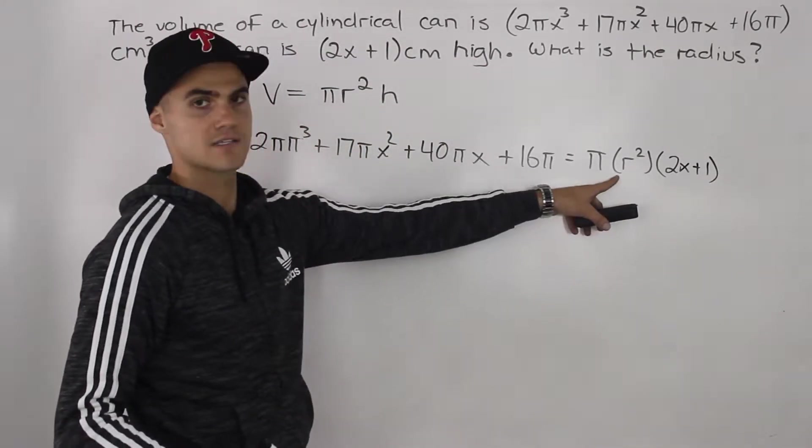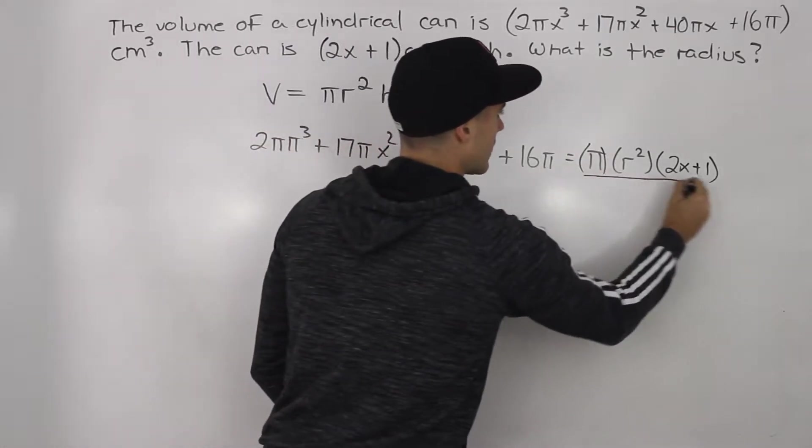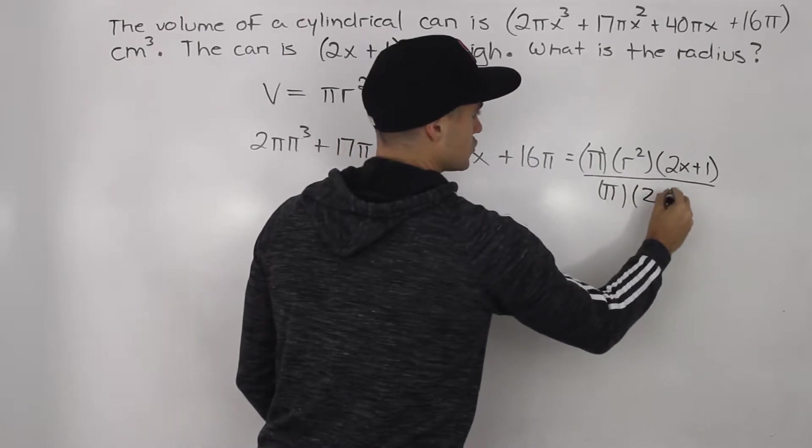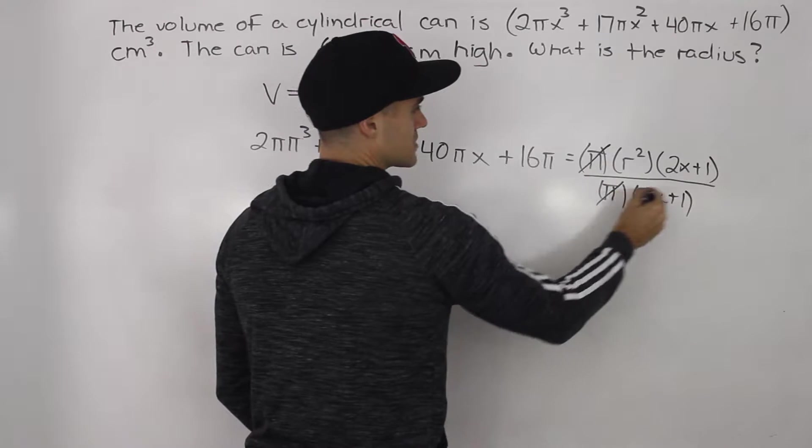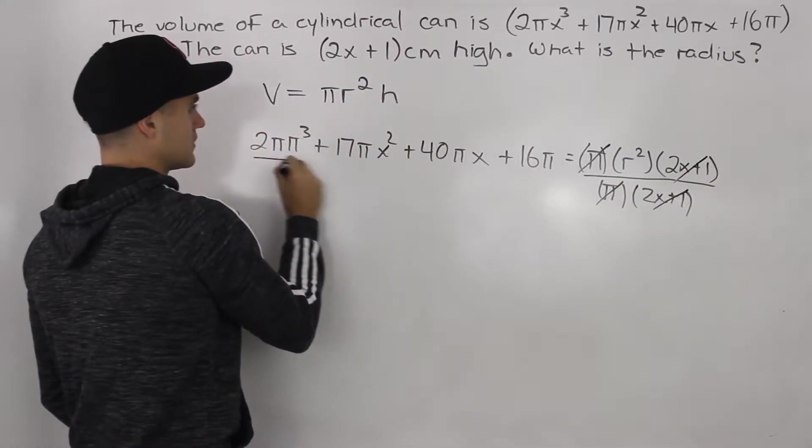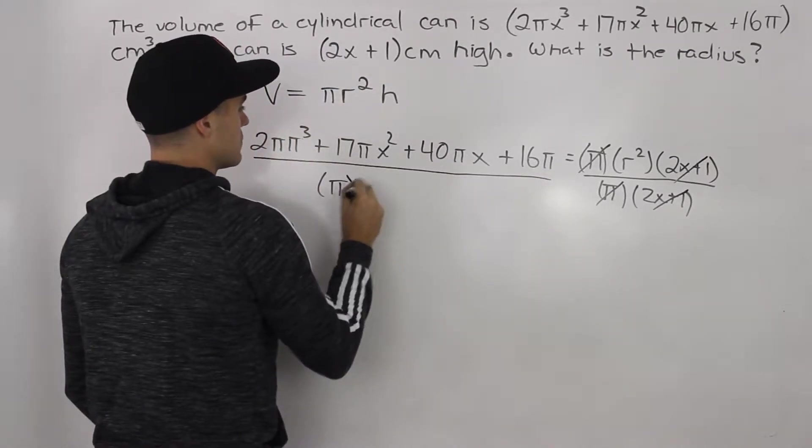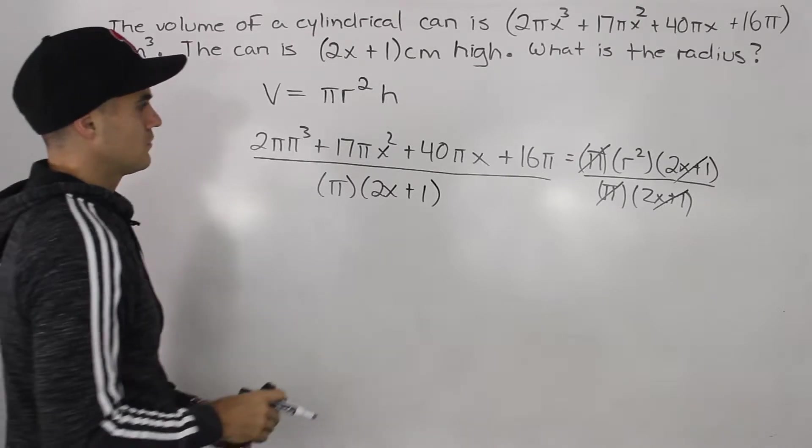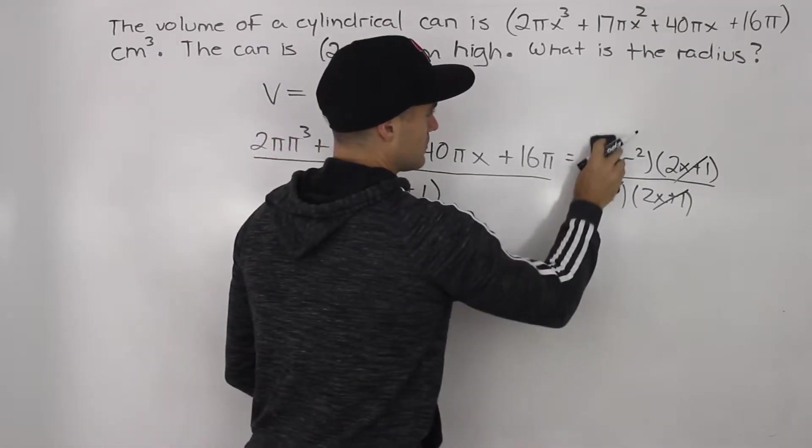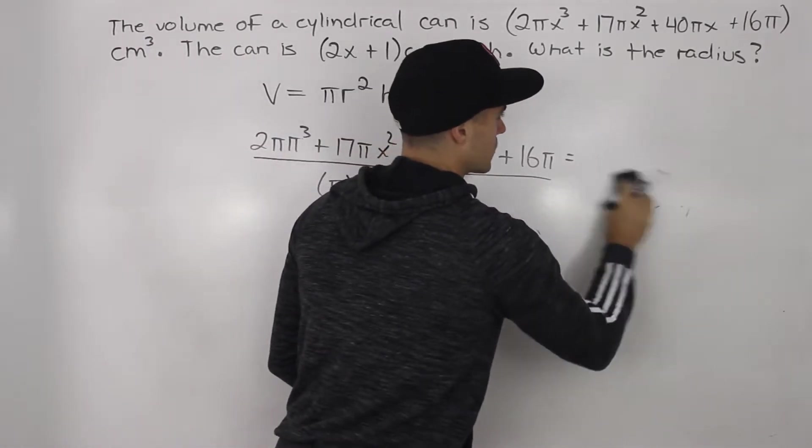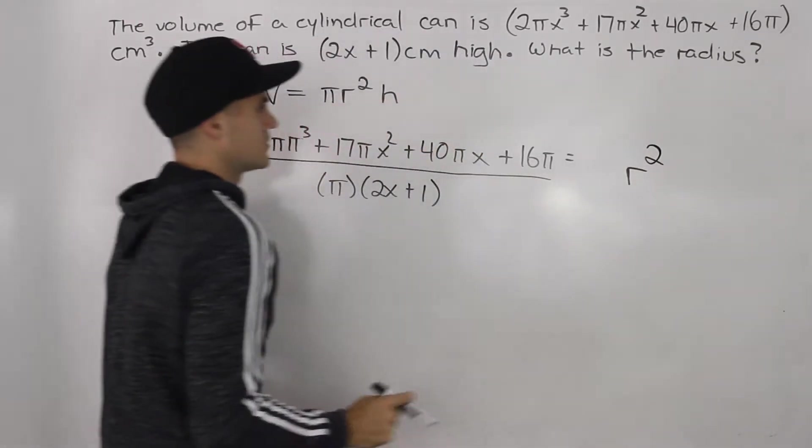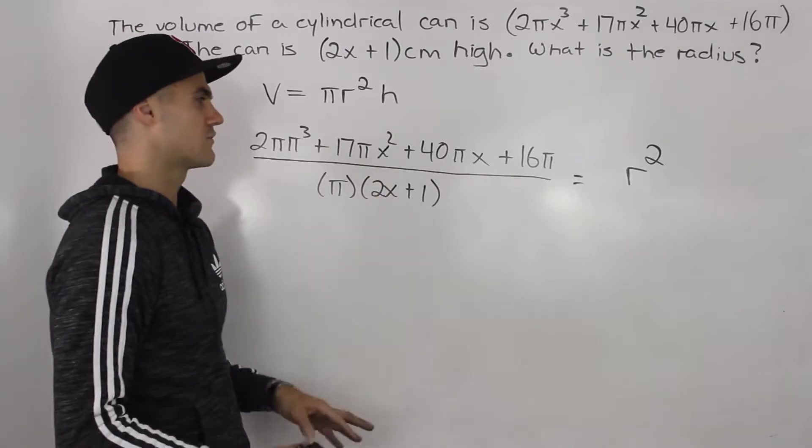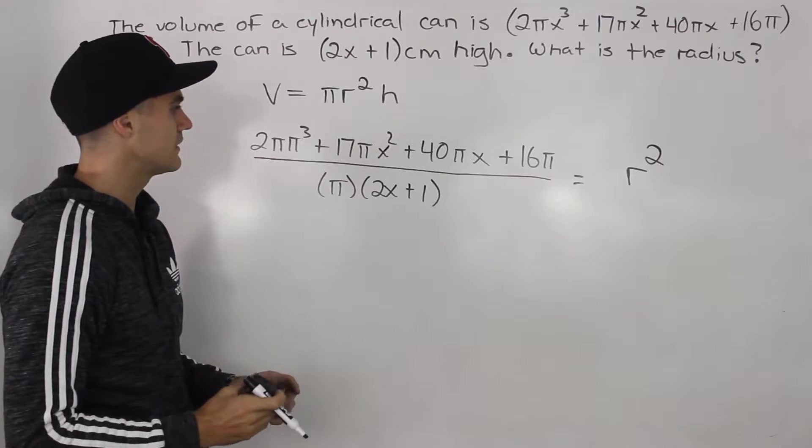To get this radius by itself, what we can do is divide this right side by π times (2x + 1). Notice how the π's will cancel out, the (2x + 1)'s will cancel out. But what we do to one side, we have to do to the other to keep this equation valid. Now what we end up having is all of this on the left side equals r². The question is, how are we going to deal with this π that's involved? It's just a constant, so it's not a big deal, but it does make things a little more complex.